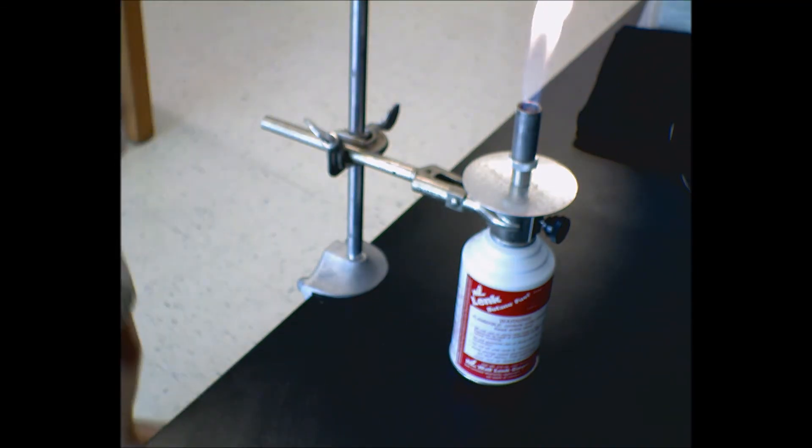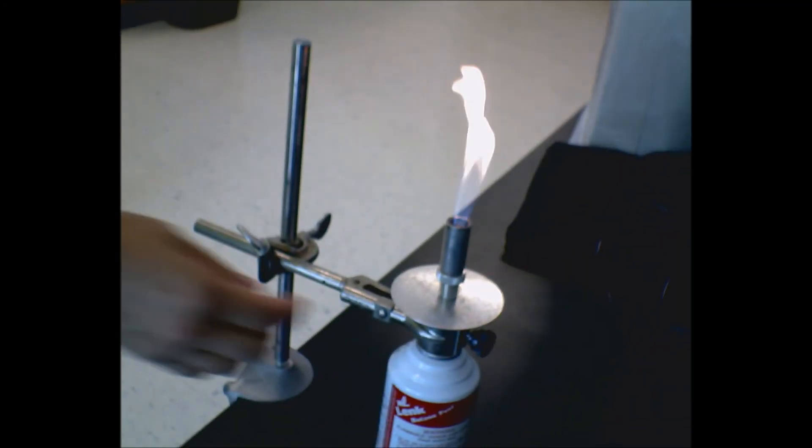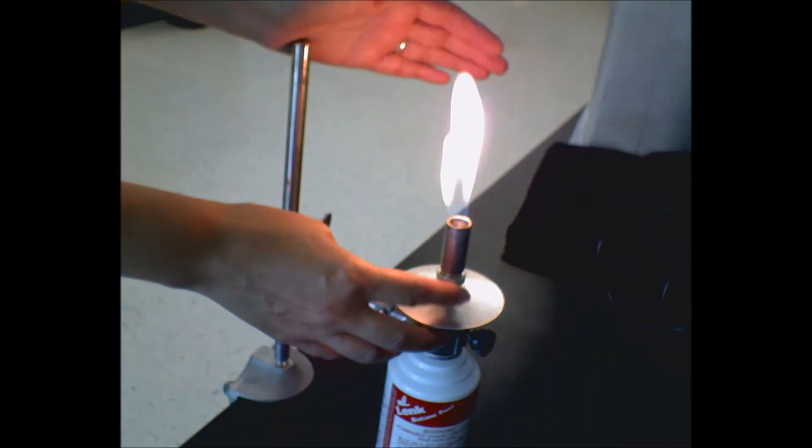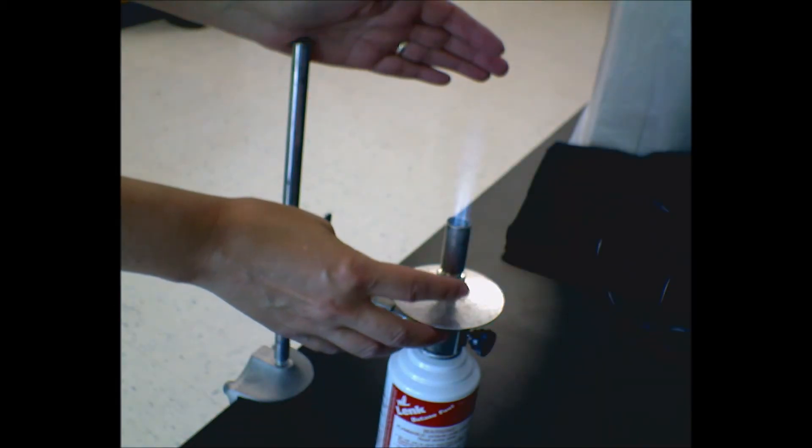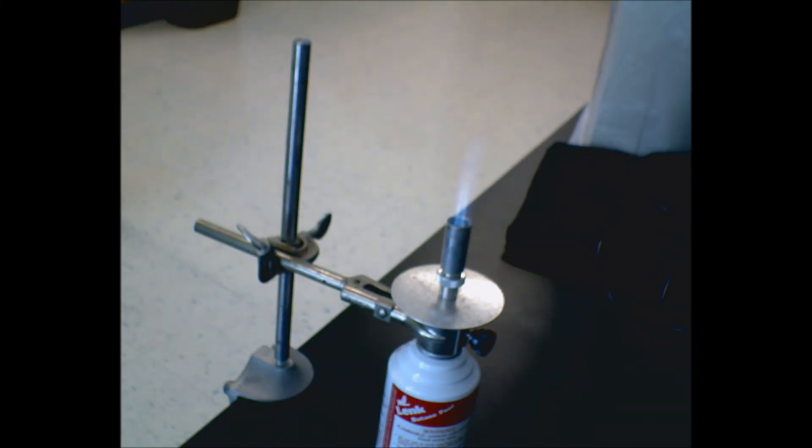You notice that's a very blue flame at the bottom but it's very yellow at the top. That's not an effective flame. So I'm going to roll this down, and all of a sudden it looks much less like a candle flame.